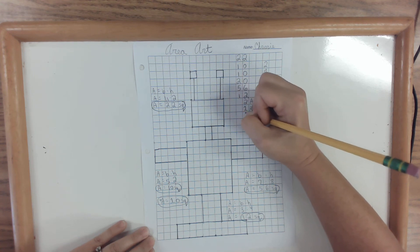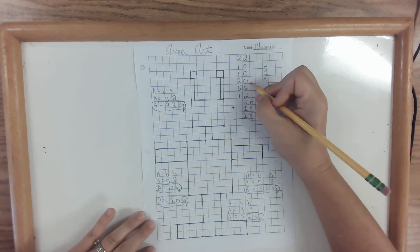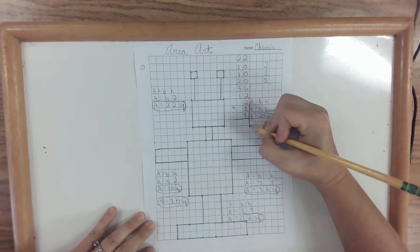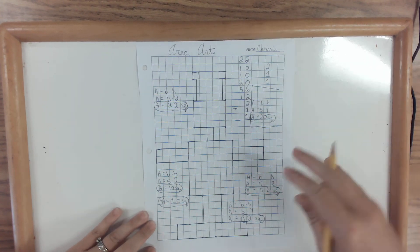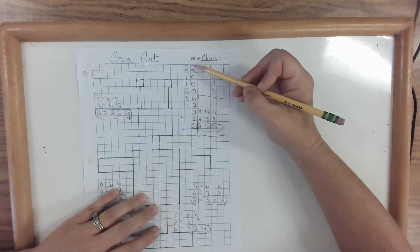Two, one, one. I am going to draw a line right here. So I don't get confused. Then I just add up all of my units.